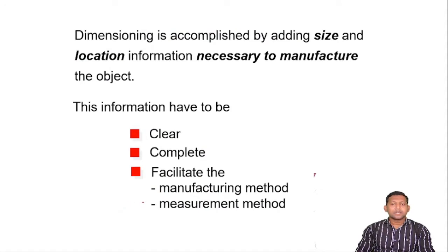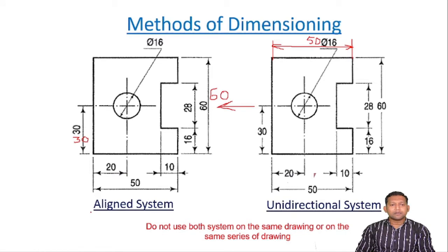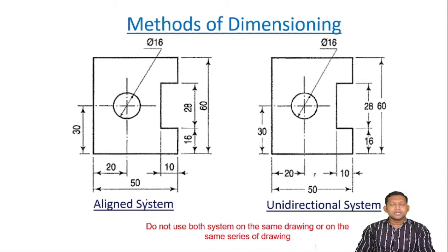This complete information for a dimension is accomplished by adding size and location information necessary to manufacture the object. That's what we've been saying — whatever values we give will be captured in the dimensioning for a particular object. There are actually two methods: one is the aligned system and another is the unidirectional system.